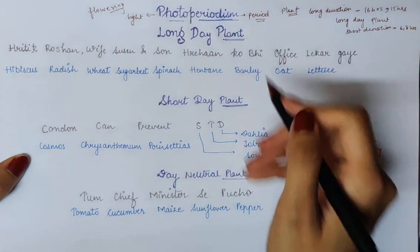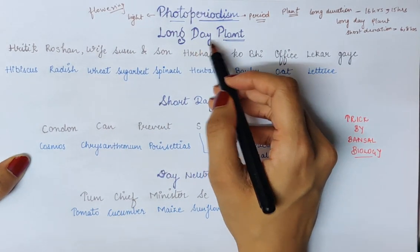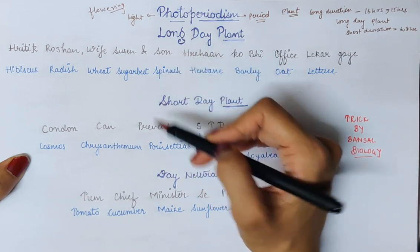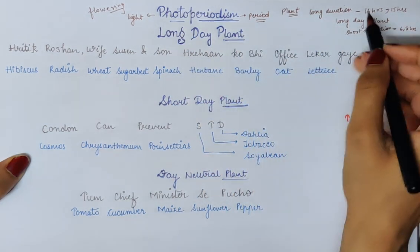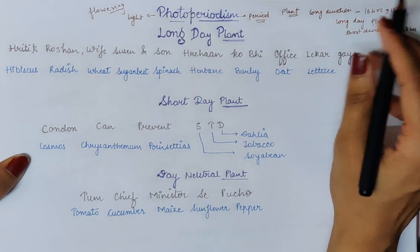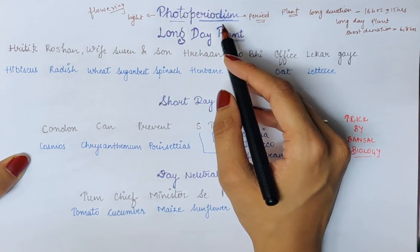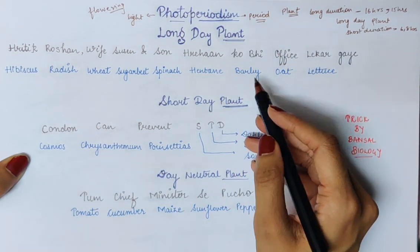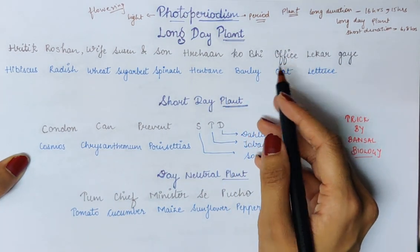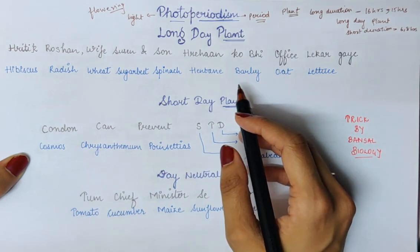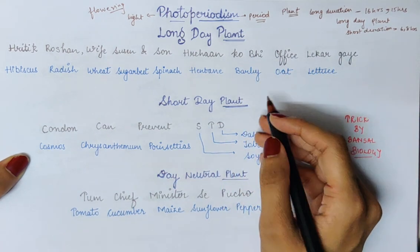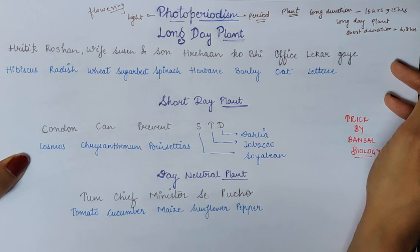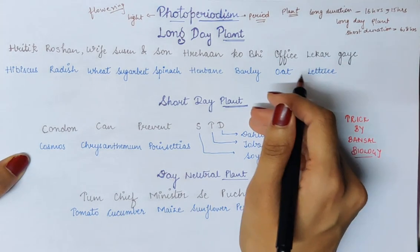So there are three types of plants. First is the long day plant. As the name suggests, we have to give this plant a long duration of light — like 16 hours, 15 hours — so it can flower. Next is the short day plant. For the short day plant, we have to provide the plant less amount of light, like 6 hours or 8 hours, so that the plant can flower.